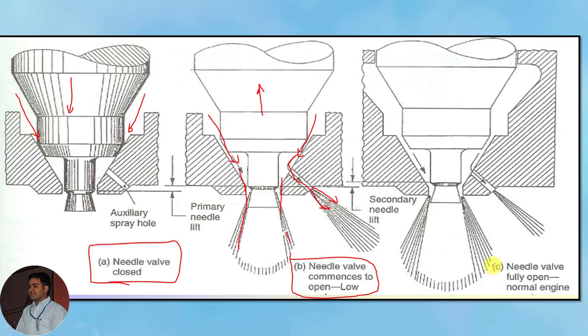The third position indicates the needle valve is fully open. In this condition, the needle valve is completely raised, so enough space is available for fuel particles. Fuel particles enter the cylinder with high velocity. Due to the high velocity at this point, the amount of fuel passing through the auxiliary hole is less compared to the earlier case.